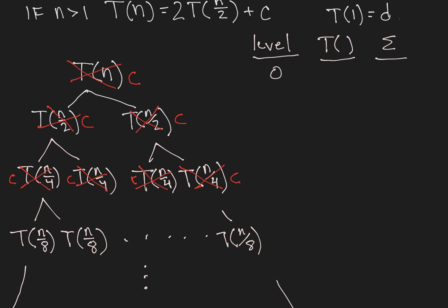So at level 0, we're representing t of n, and there's a total of c at that level. At level 1, we're representing t of n over 2, and there are two c's at that level.